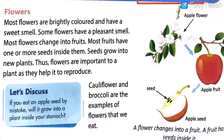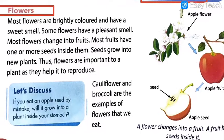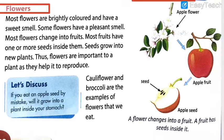Let's move towards another part of the plant which is very beautiful and we human beings use it in different ways — that part is flower. There are different kinds of flowers we like, on the basis of which we even plant different trees and plants. Let us get into this topic of flower. Most flowers are brightly colored and have a sweet smell. Some flowers have a pleasant smell. Most flowers change into fruits. Most fruits have one or more seeds inside them. Seeds grow into new plants. Thus, flowers are important to a plant as they help in the reproduction process.